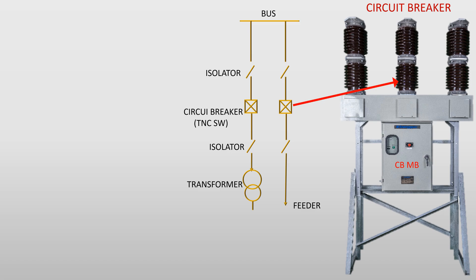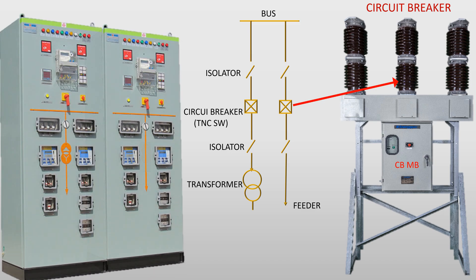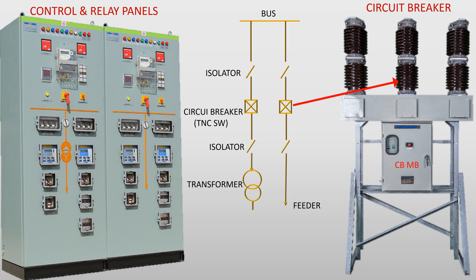A control and relay panel installed at the control room consists of relays, meters, hooters, annunciators, indication lamps, mimic diagram, and control switches along with TNC switches. Besides, the TNC switch is also installed at the circuit breaker mechanism box for local operation.